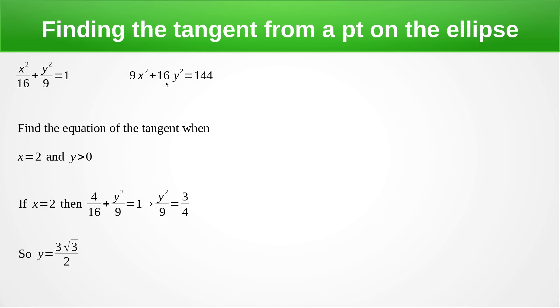This becomes 32y. Because it's with respect to x we shove a dy/dx in the end and this becomes 0. Rearrange that and we get dy/dx = -9x / 16y.